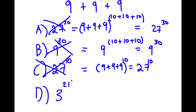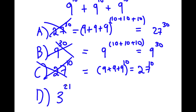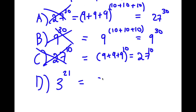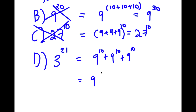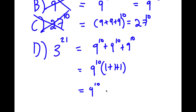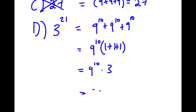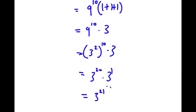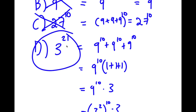Finally, we have D: 3 to the power of 21. By process of elimination this is the correct answer, but let's verify. We have 9 to the power of 10 plus 9 to the power of 10 plus 9 to the power of 10. Factoring out 9 to the power of 10 gives 9 to the power of 10 times 1 plus 1 plus 1, which equals 9 to the power of 10 times 3. Since 9 is 3 squared, this is 3 squared to the power of 10 times 3, equal to 3 to the power of 20 times 3 to the power of 1, which equals 3 to the power of 21.